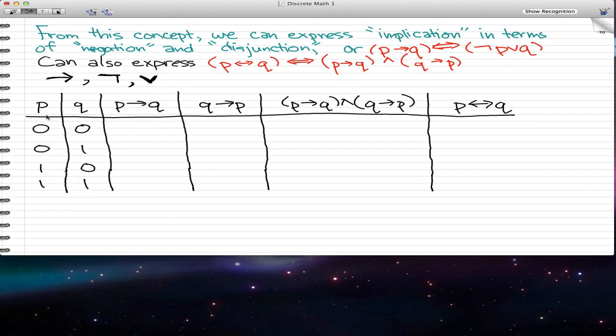Let's fill out this table. We start off with what we always start off with: 0, 0, 1, 1, 0, 1, 0, 1. And when p implies q, 0 implies 0 that is 1, 0 implies 1 that is 1, 1 implies 0 that's 0, 1 implies 1 that's 1.